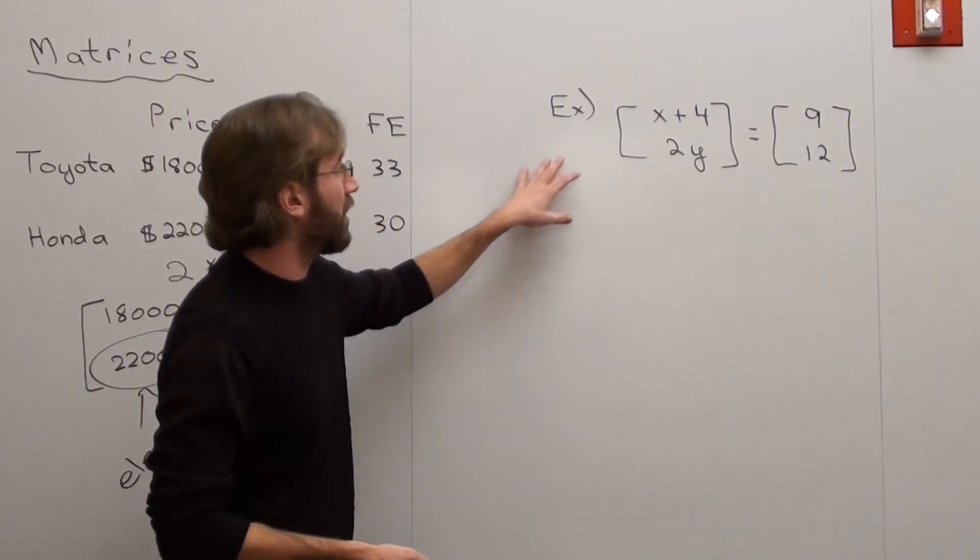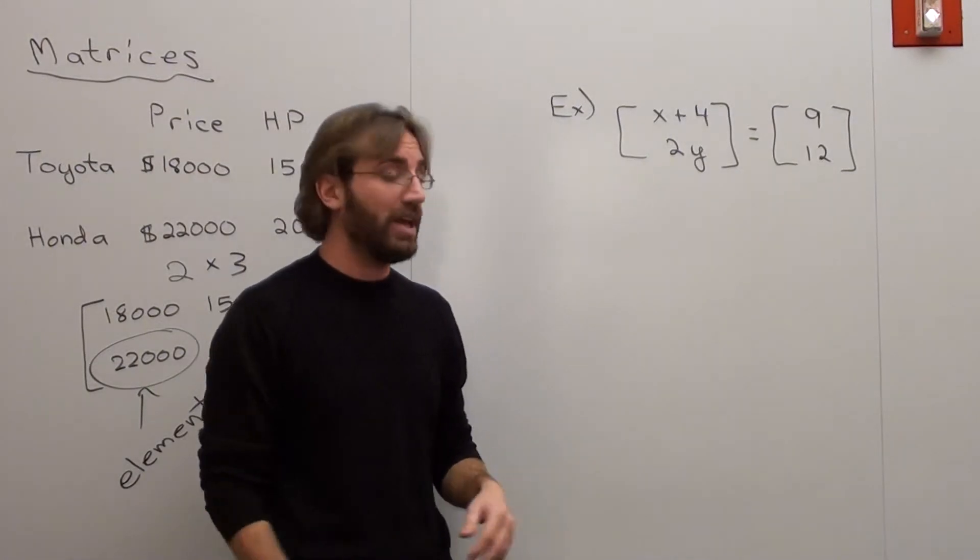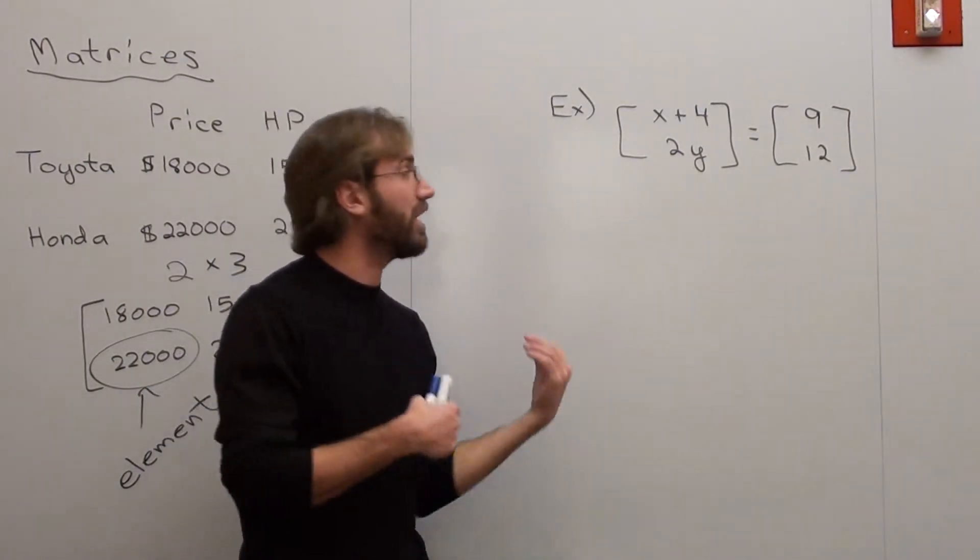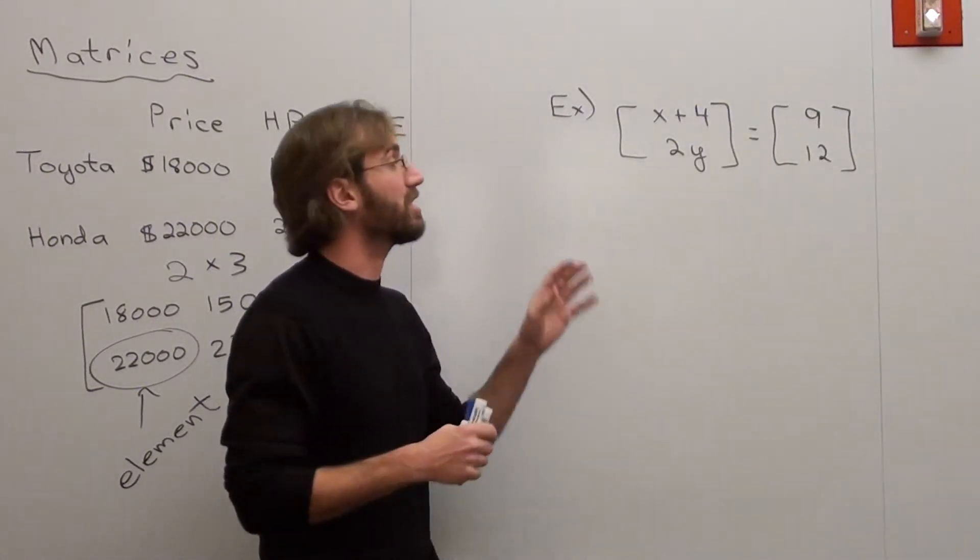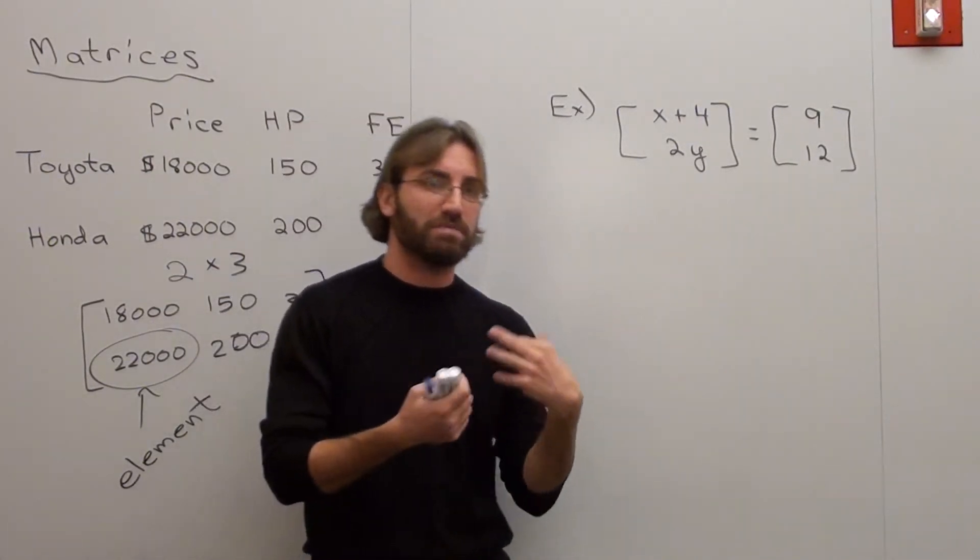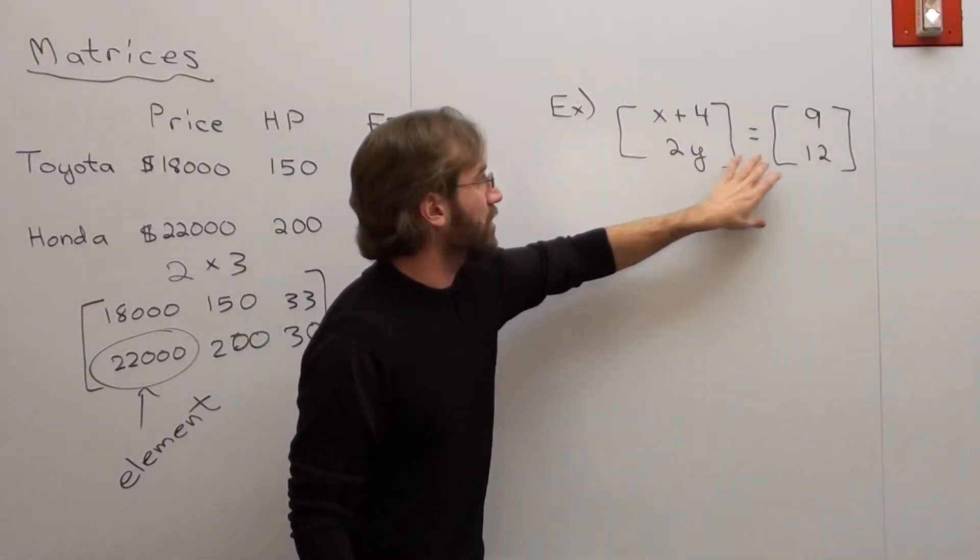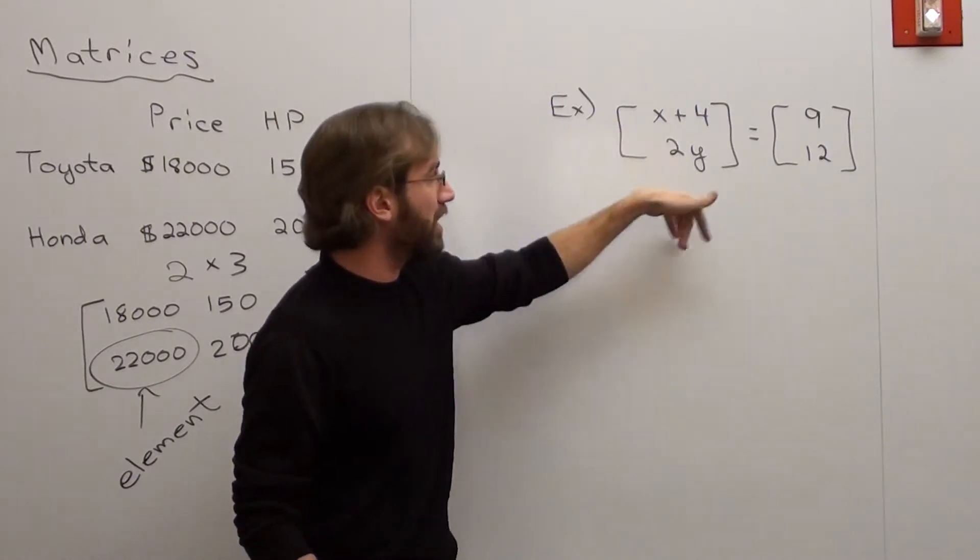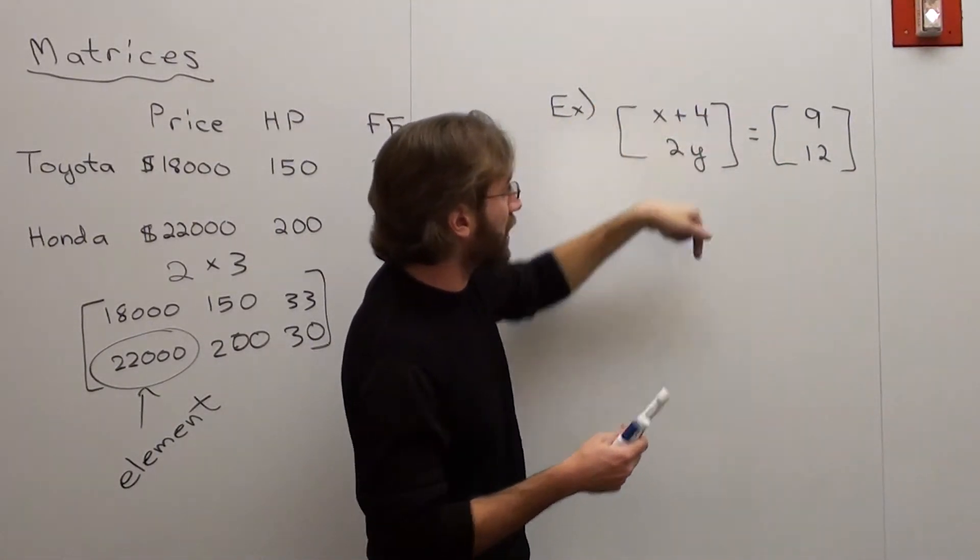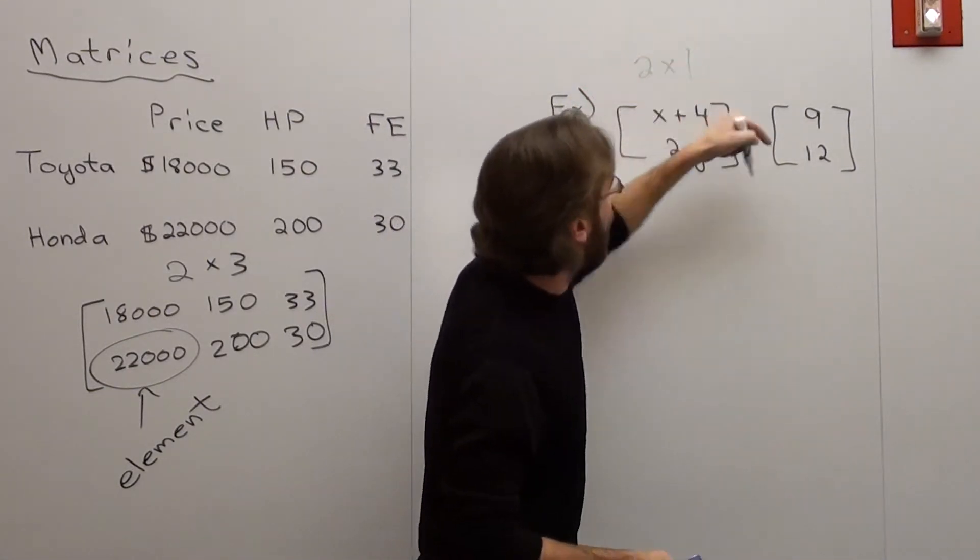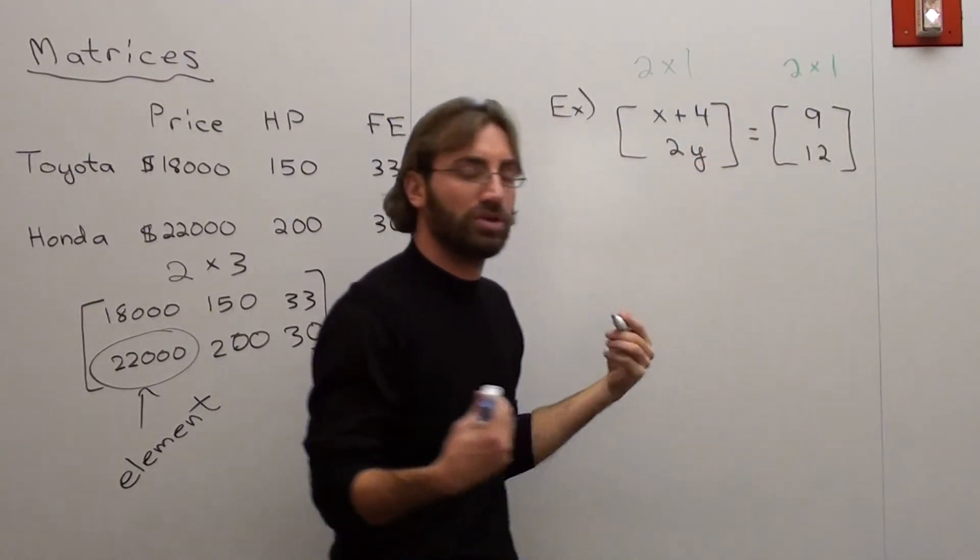So I got another example right here. And this is one that usually throws students off because they just find it intimidating no matter what. Some students are sold that they can do matrices or matrix properties, operations, etc. And some just don't believe they can. And if you just build up the confidence, it's not too bad. So I've got this problem where I've got this matrix equal to this matrix. Now this is a two by one matrix. This is a two by one. It's two because there's two rows, one column. And this one is two rows, one column. So it's a two by one matrix equal to a two by one matrix.